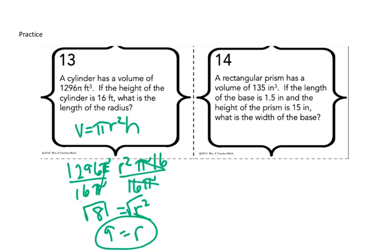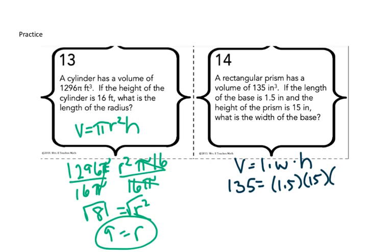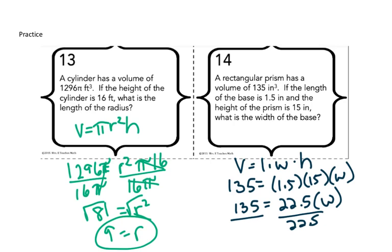If a rectangular prism has a volume of 135 inches cubed, the base is 1.5 and the height of the prism is 15, what is the width of the base? Remember volume is length times width times height. We already know it's 135 equals 1.5 times 15 times our width. When we do that, we're going to get 22.5. So 135 equals 22.5w. We divide both sides by 22.5 to get w by itself, and my width is 6.